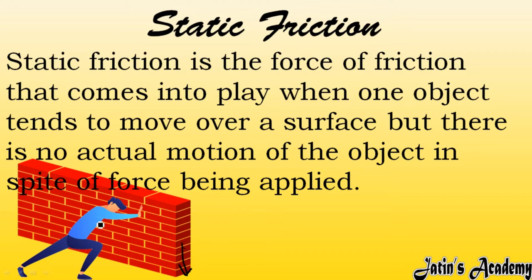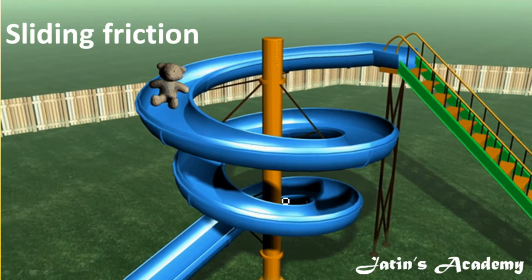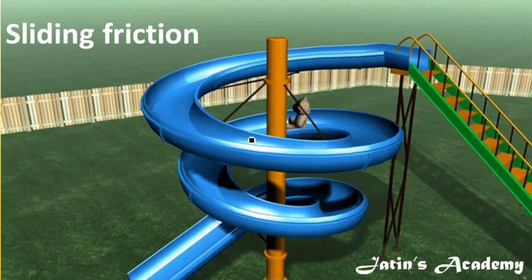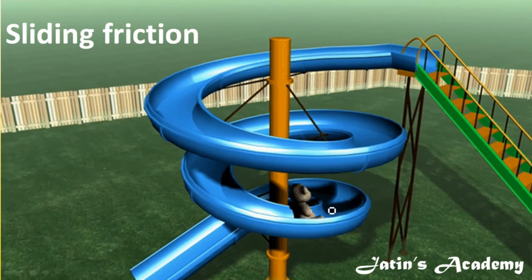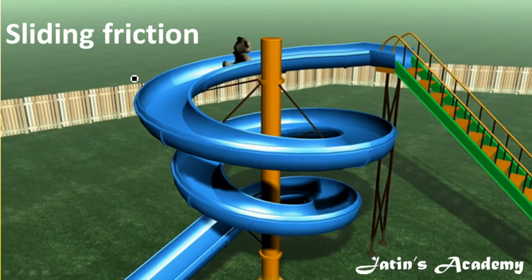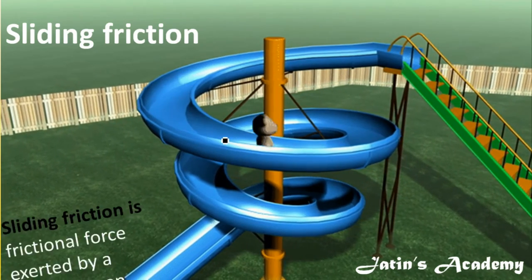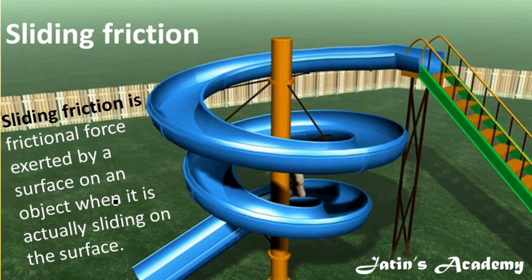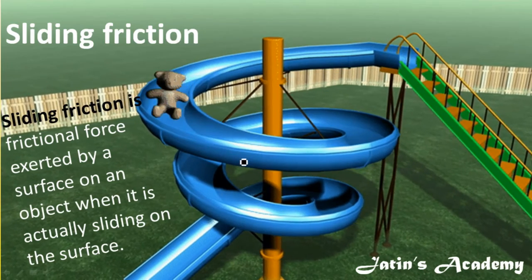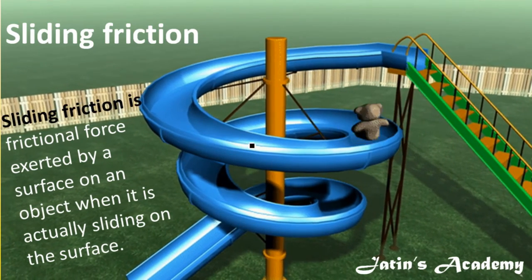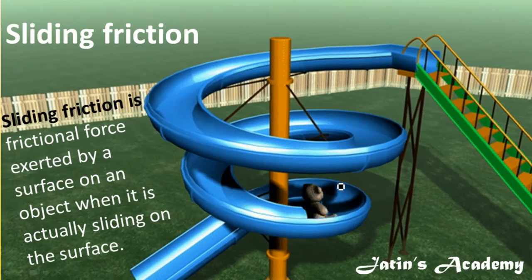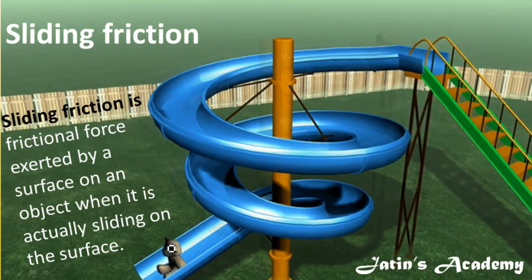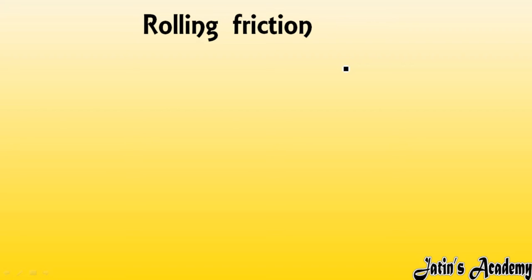When the applied force cannot overcome the frictional force, the object does not move at all — this is static friction. Sliding friction is the frictional force exerted by a surface on an object when the object is actually sliding over the surface of another object.